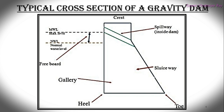Next is NWL, the Normal Water Level. The difference between MWL and NWL is known as the freeboard. To prevent overtopping of the dam during peak flood, a sufficient margin is left between the FRL and the top of the dam. Freeboard can be of two parts: gross freeboard and net freeboard. Gross freeboard is the difference in level between the top of the dam and the MWL.